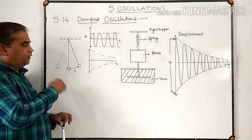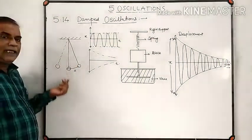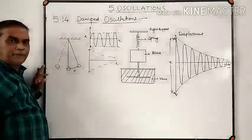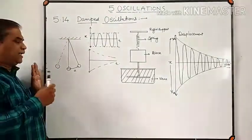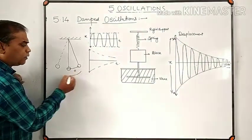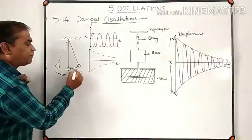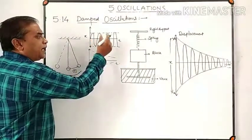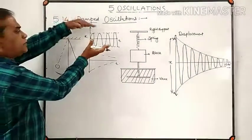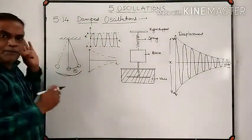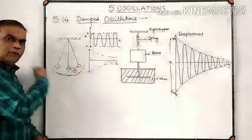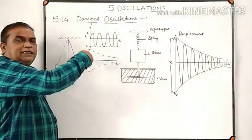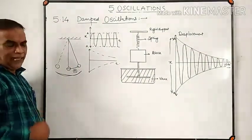Under ideal conditions, if air does not exert any viscous force on the bob of a simple pendulum, or no frictional forces are produced at the point of contact, then ideally we can expect that the pendulum continues to oscillate about its mean position with the same amplitude of vibration. We get oscillations which repeat after a regular interval of time with no change in amplitude. Under ideal conditions, the pendulum performs periodic oscillation with constant amplitude.